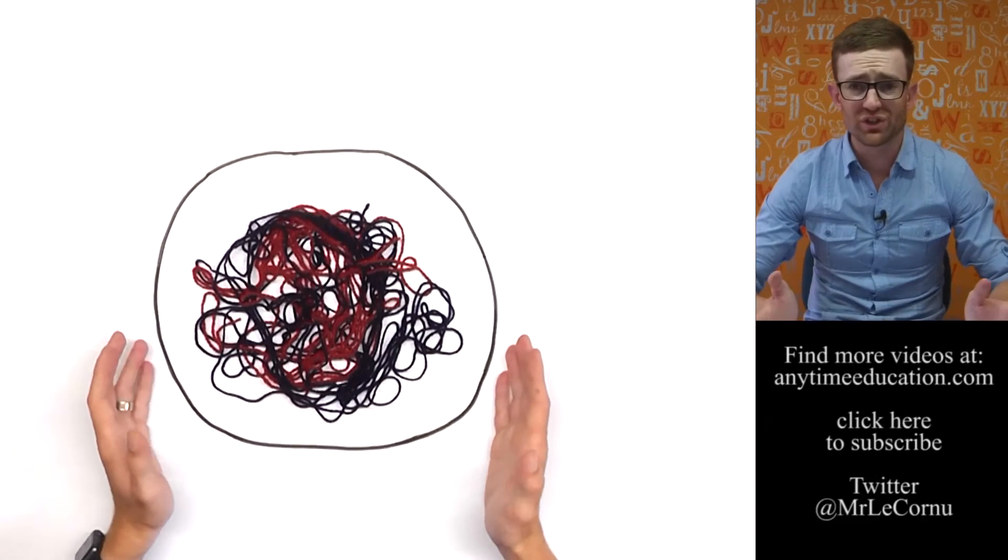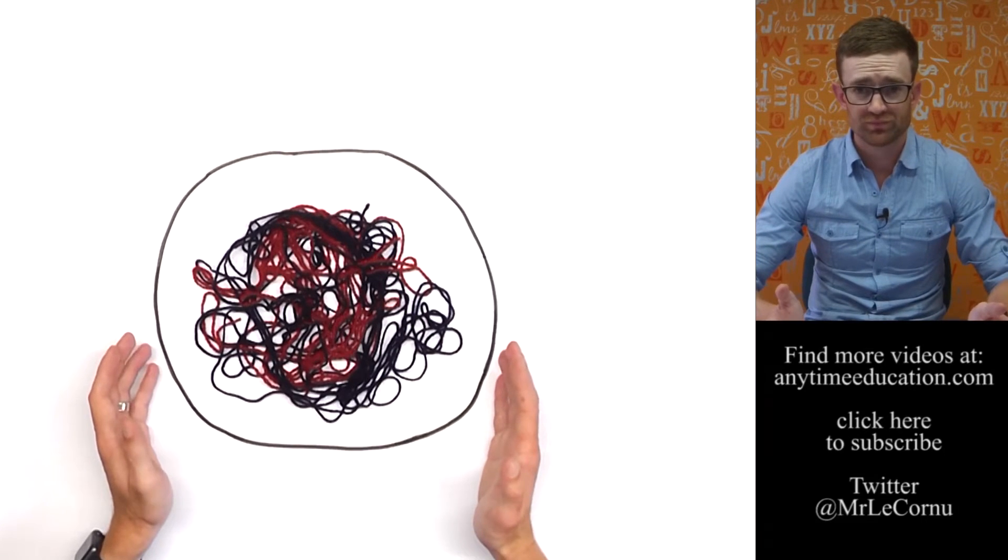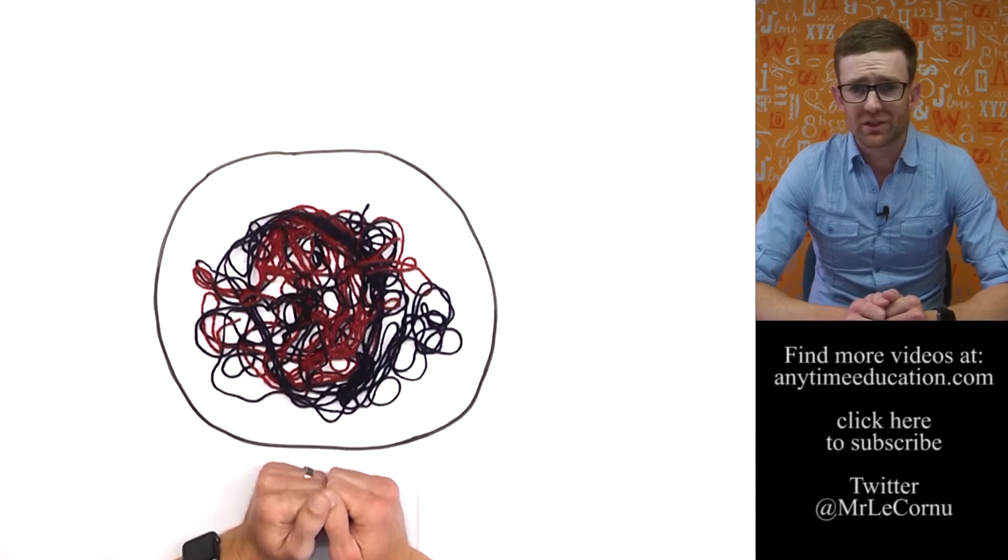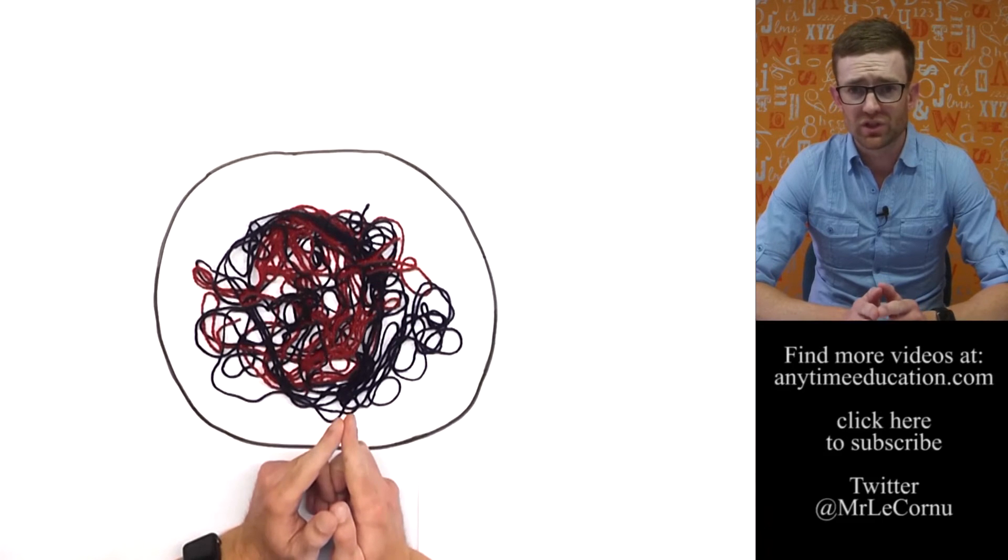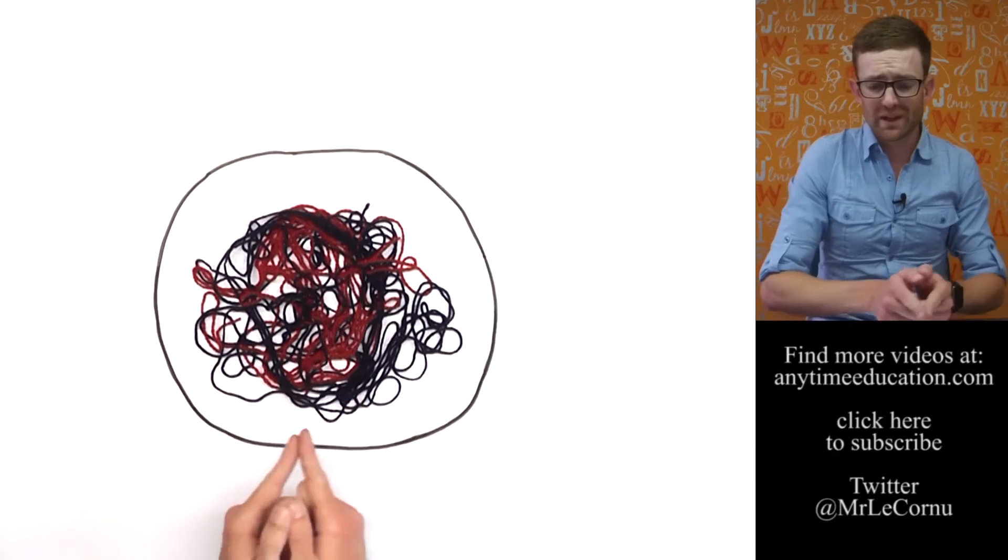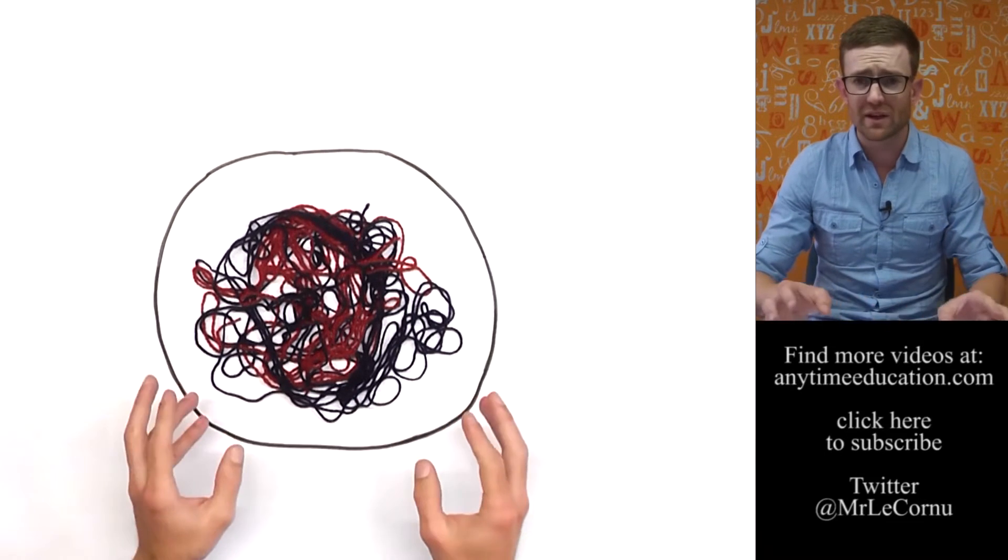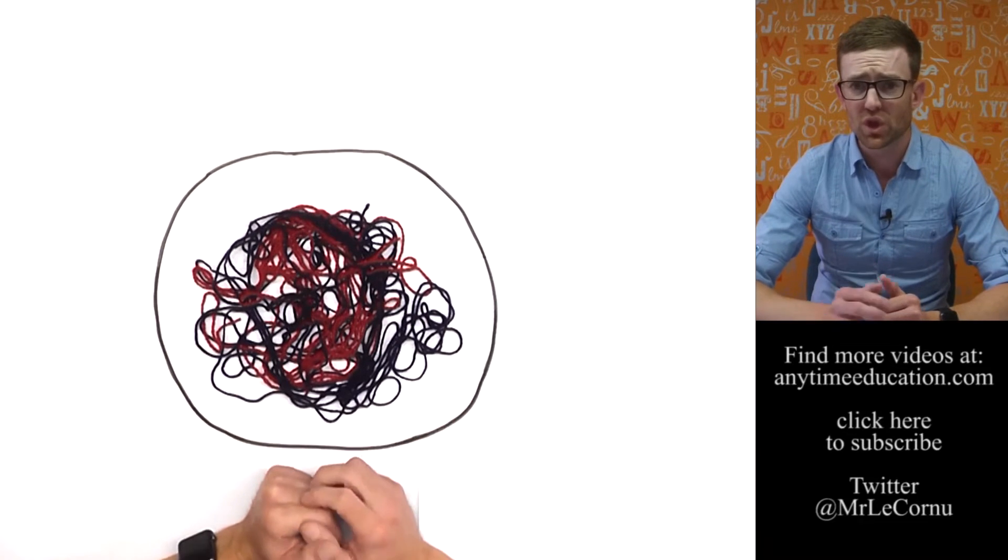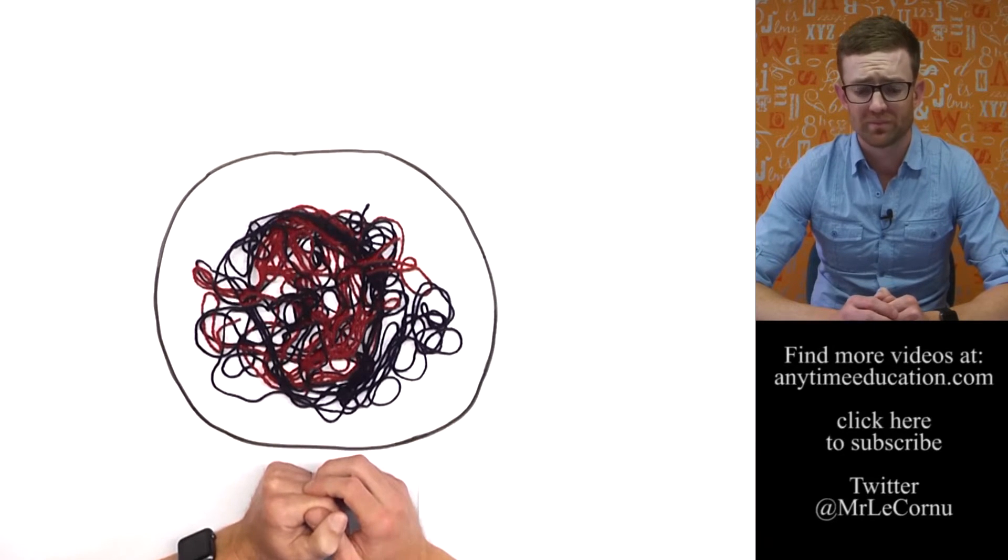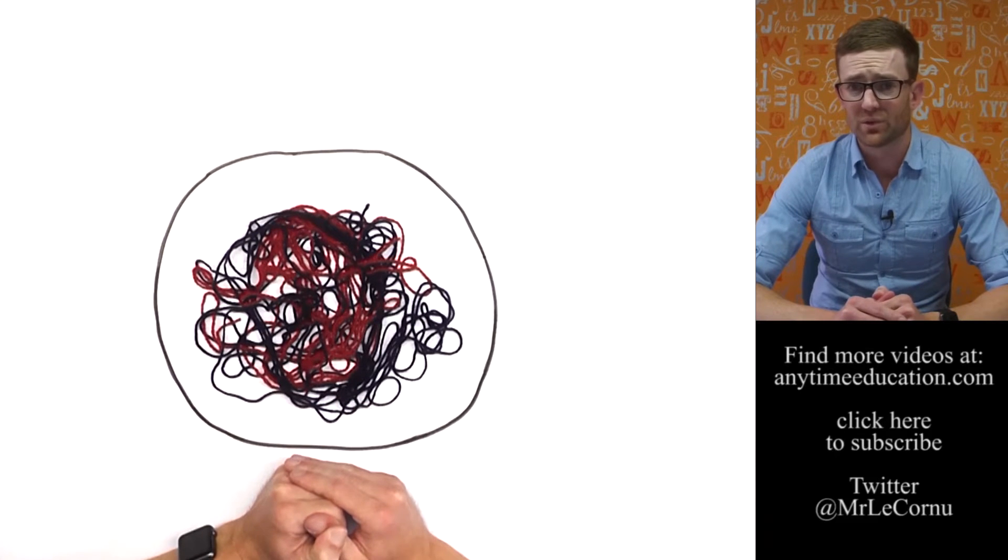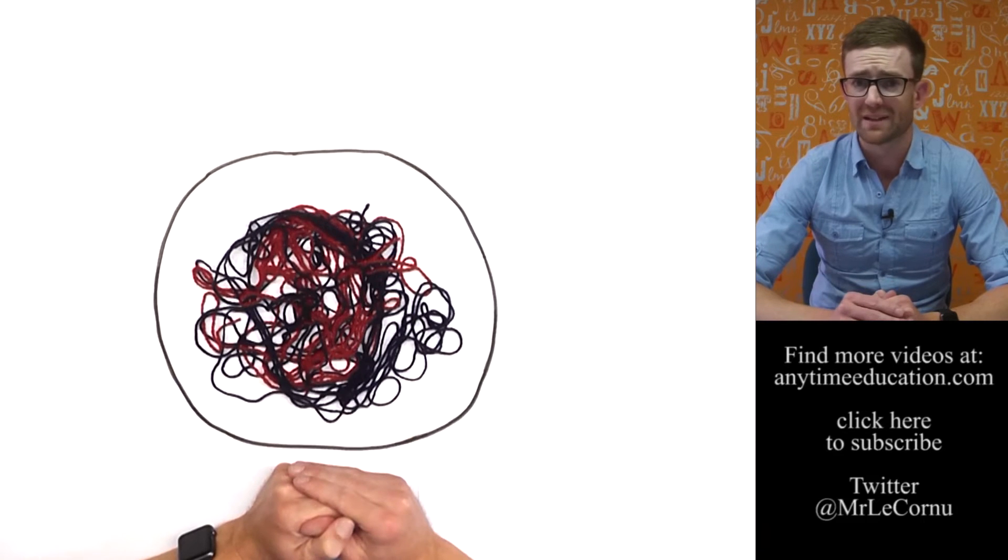So here we've got the nucleus of a cell. Here's the DNA. Now, of course, because we're about to go through mitosis and cell division, before we get to this point, DNA replication has already occurred. So if we're going to divide up the DNA, we need to have copies, two copies of every chromosome. And that replication would have happened in the S phase of the cell cycle, which is the synthesis phase. But there'll be more on that in the cell cycle video.